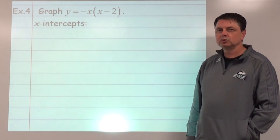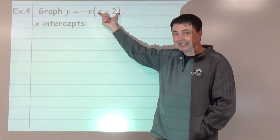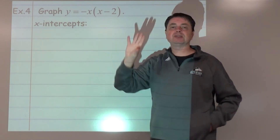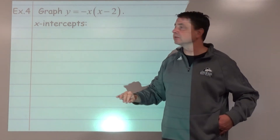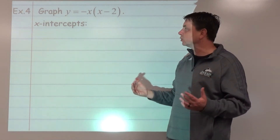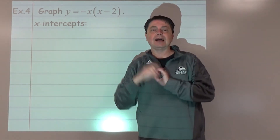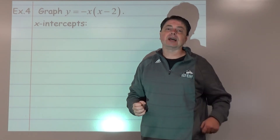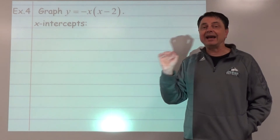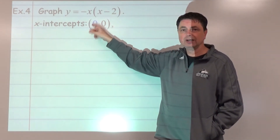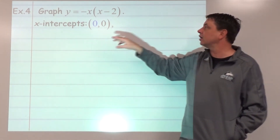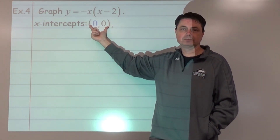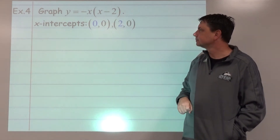Example 4: graph the function. Find the x-intercepts first. Think opposite to get (2, 0). For the other factor — ignore the negative sign on a, that applies to the whole expression, not the intercept. The factor x is the same as x minus 0, so any factor of x, 2x, or 5x gives an x-intercept at (0, 0). So our two x-intercepts are (2, 0) and (0, 0).